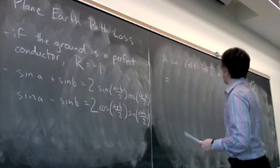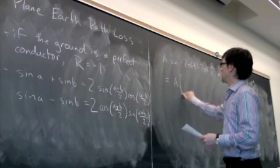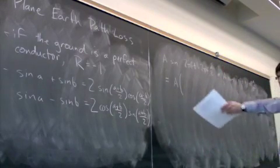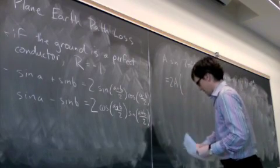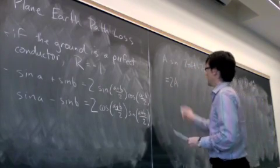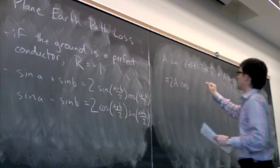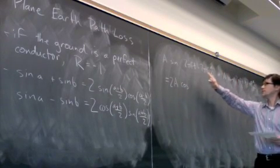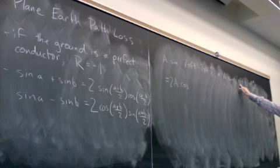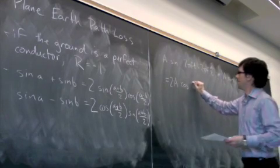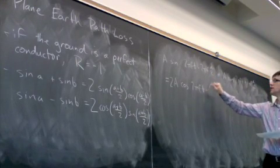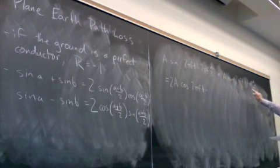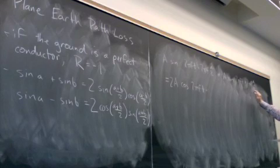I can take the A out, and using that identity I can take the two out. So I get 2A cos, so that's 2 pi ft plus 2 pi f times d1 plus d2 over 2c, sine 2 pi ft plus the difference term over 2.